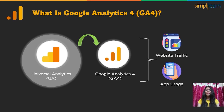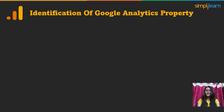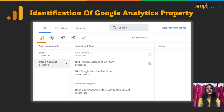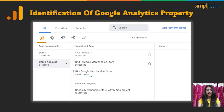Let's first identify which Google Analytics property is associated with your website. To do so, log in to your Google Analytics account, go to Analytics Account, and then open Properties and Apps. Here you can see properties for your website. Below the properties and apps, several properties are listed with different IDs. If the ID starts with UA and ends with a number, then you have a Universal Analytics property. However, if the ID only has numbers, then you have a Google Analytics 4 property.